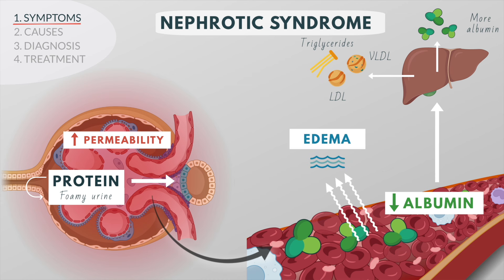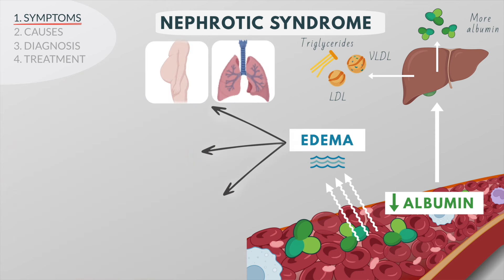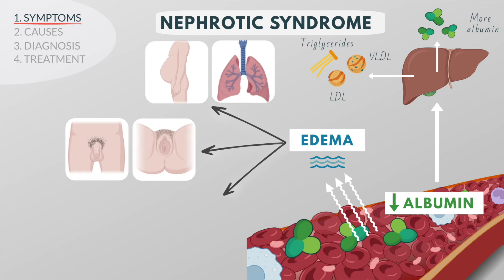The decreased level of albumin also causes fluid to leave the bloodstream and enter the tissues. This causes the kidneys to compensate by retaining even more water and sodium. Ascites or pleural effusion may develop because the fluid accumulates in the abdominal cavity or in the space surrounding the lungs. Swelling of the labia or the scrotum can also occur.